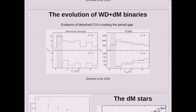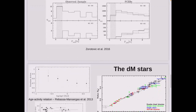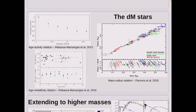CVs with the same mechanism are supposed to detach at some point when magnetic braking switches off — between about two to three hours — and they enter the so-called period gap. When they do this, they effectively become detached systems and look exactly like the rest of the sample. Monica Zorotovic showed a few years ago that you can actually see these systems in the sample of detached systems. You can also use these systems to study a whole bunch of other stellar physics, such as the mass-radius relation for low-mass stars, the age-activity relation, and the age-metallicity relation. These really are ideal laboratories for studying a whole range of stellar physics.